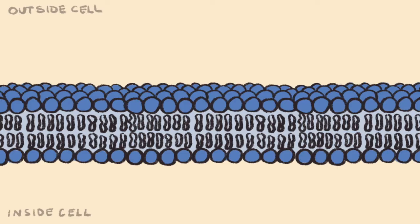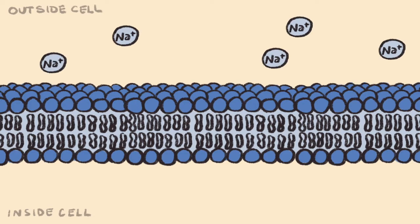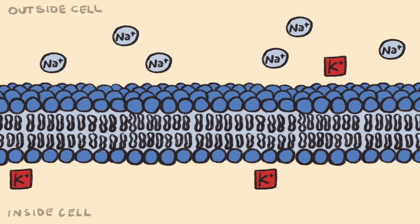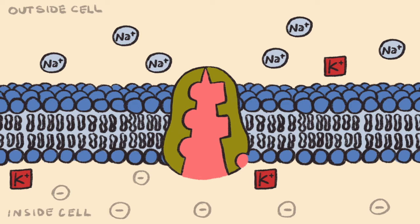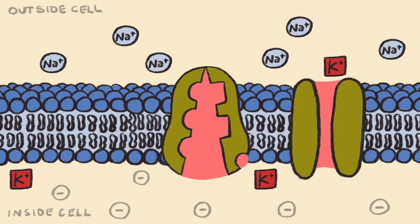In other words, there are more positively charged molecules outside the neuron and more negatively charged molecules inside the neuron. At rest, the neuron membrane potential is primarily driven through the combined efforts of sodium-potassium ATPase pumps and potassium leak channels.